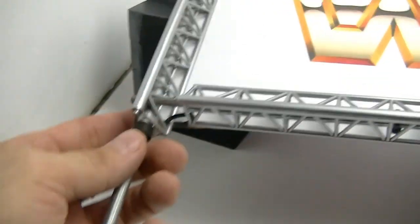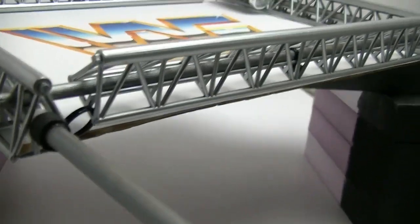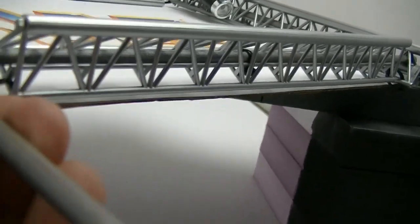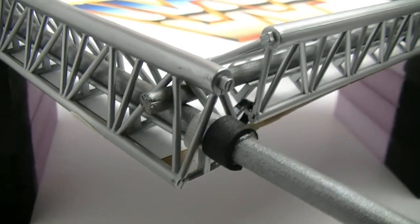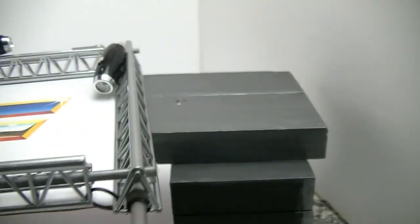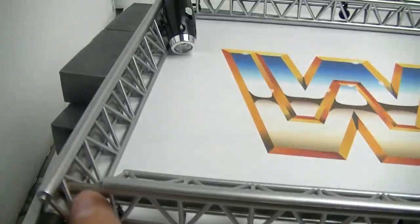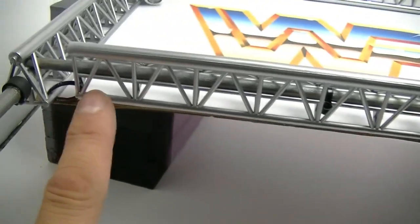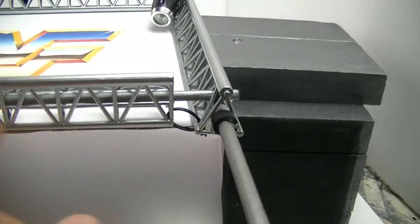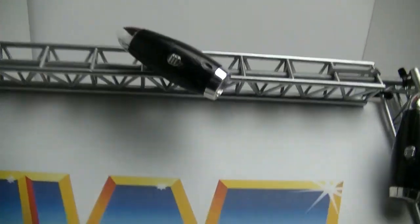I zip tied it. I put the dowel rod in there, fit pretty good, then zip tied it to the plastic. Did the same thing on that side. Then I added a couple of zip ties here so it doesn't pull too much in any direction. Did the same thing for the top.